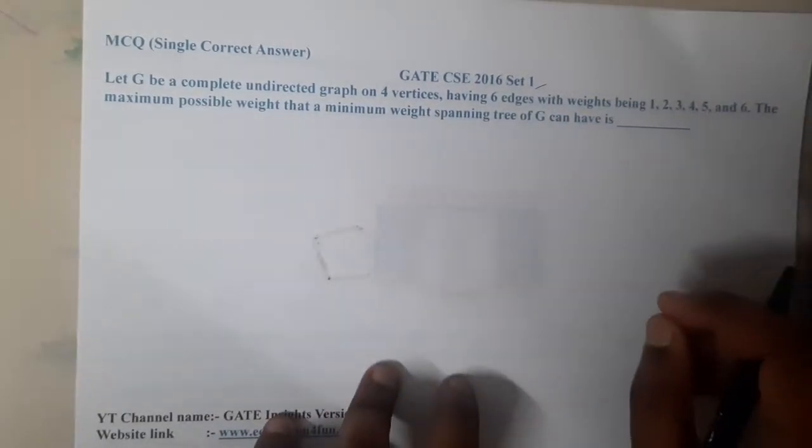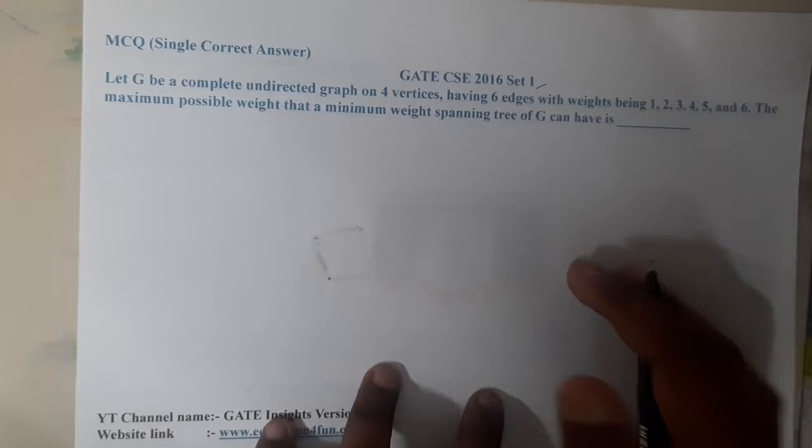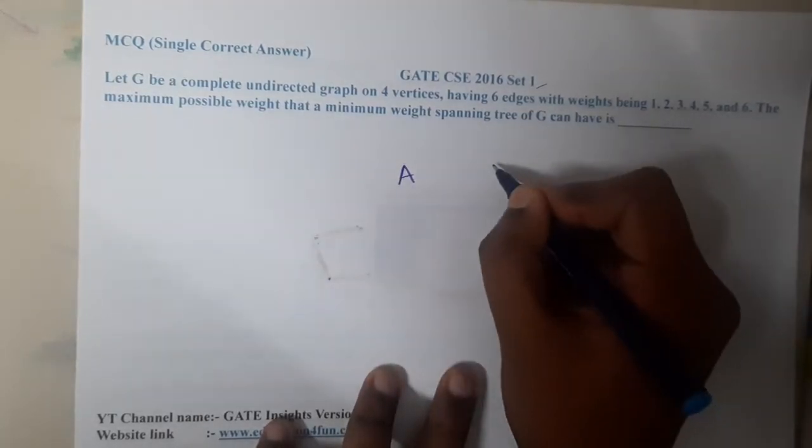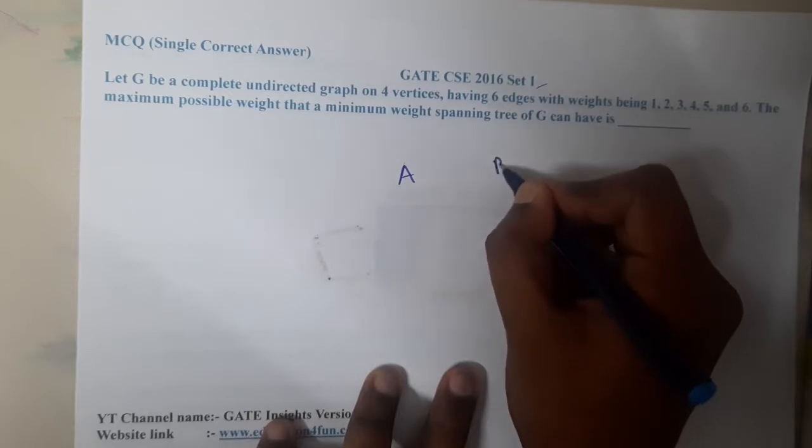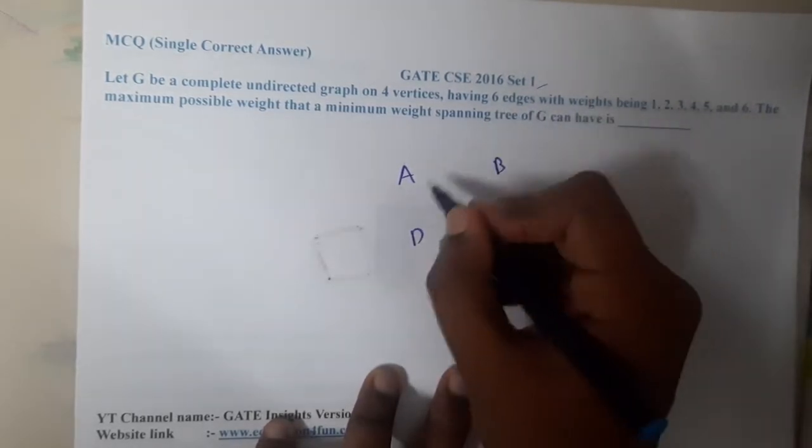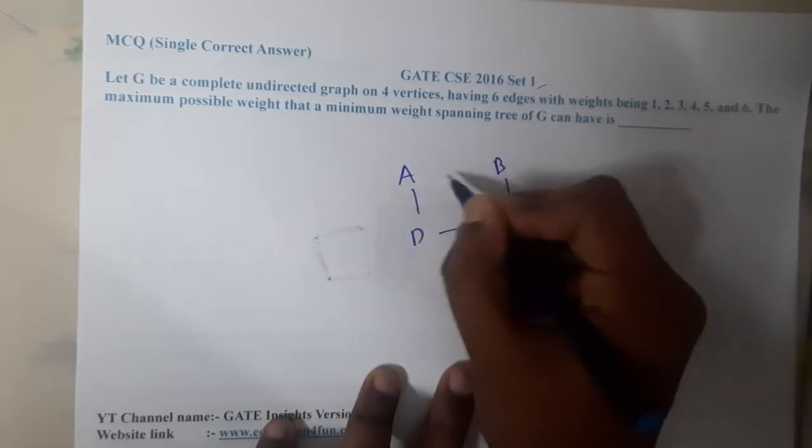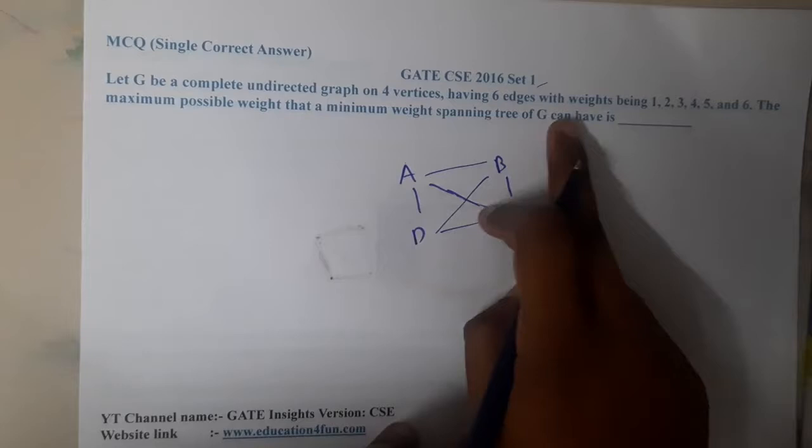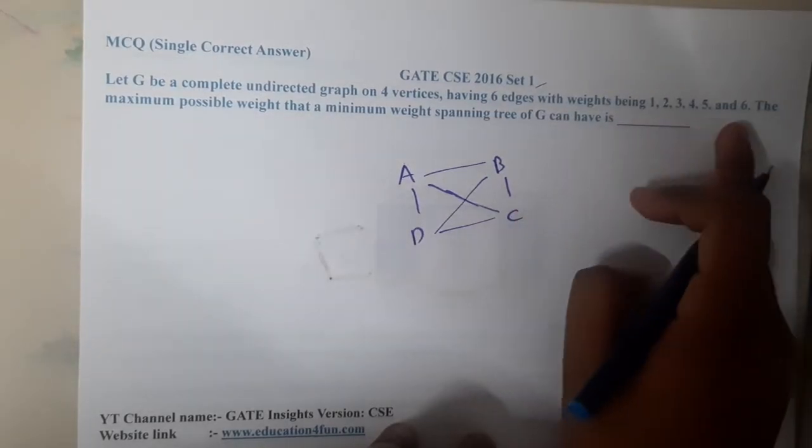Let me draw the example first. It is saying complete undirected, so it is having four vertices. Let me draw it this way - six edges are there, one, two, three, four, five, and six. With the weights being one, two, three, four, five, and six. They did not say the exact positions.